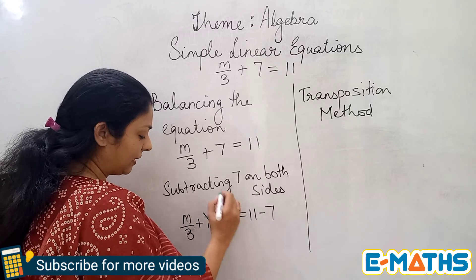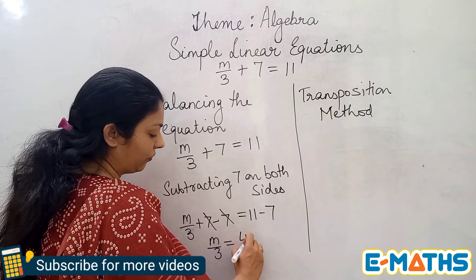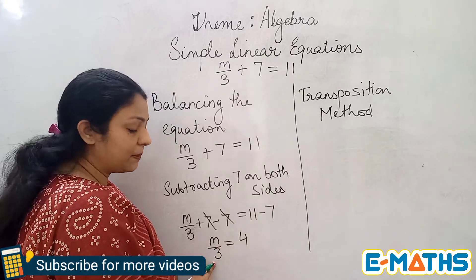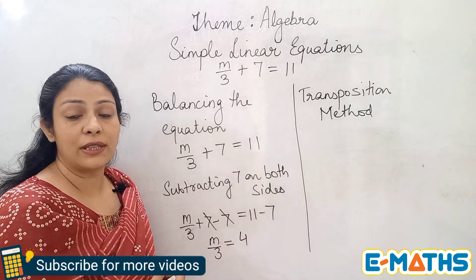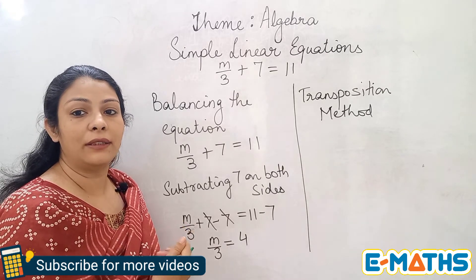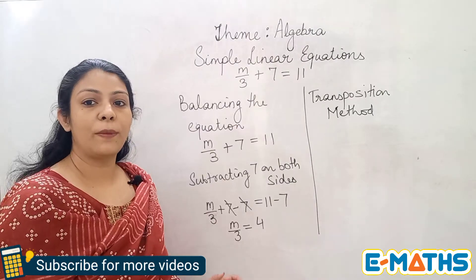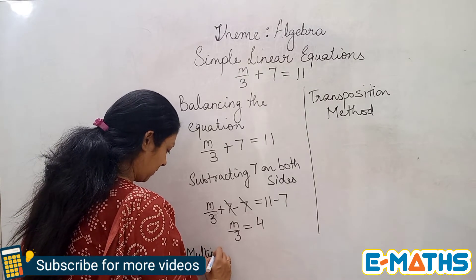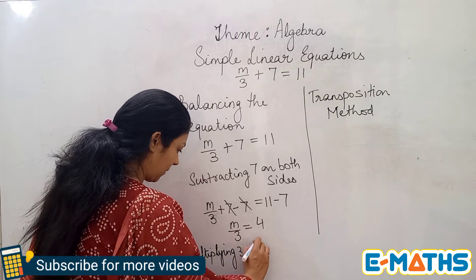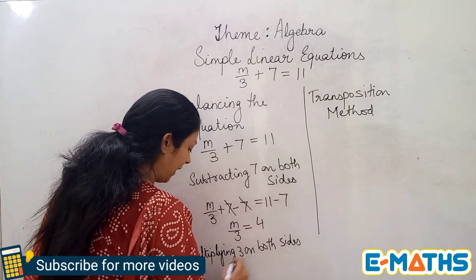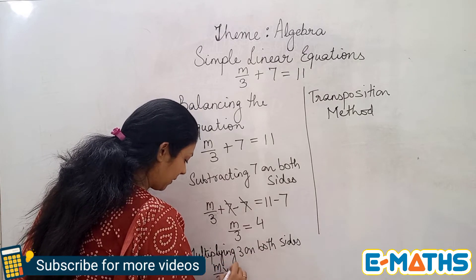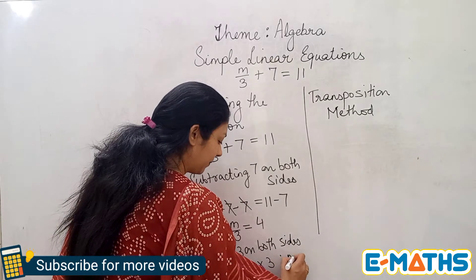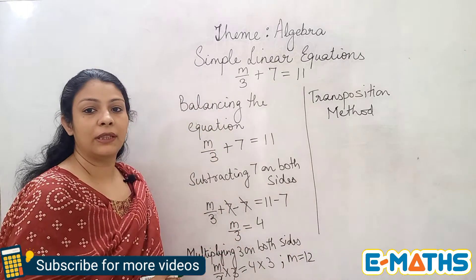Subtracting 7 on both sides: m upon 3 plus 7 minus 7 equals 11 minus 7, so the 7 cancels and we are left with m upon 3 equals 4. Now, 3 is being divided, so I take the opposite operation — multiplication. Multiplying 3 on both sides, the 3 cancels on the left, and m equals 4 times 3, which gives m equals 12.